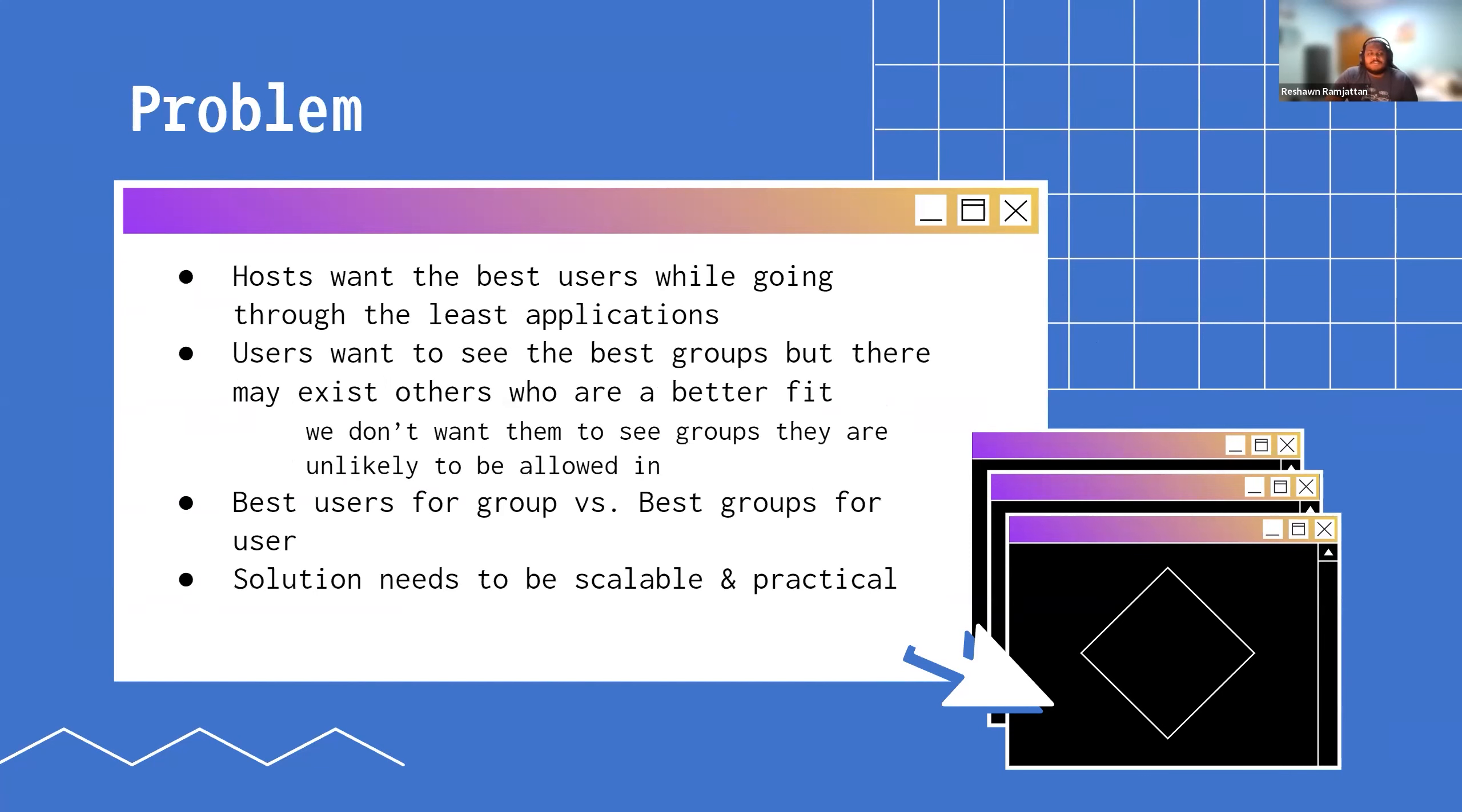But the problem is the users and the hosts kind of have conflicting needs. The hosts want the best possible people while going through the least applications, and the users want to see the best possible groups, but there may be other people who are a better fit. We don't want to overload the hosts, so we don't want people to see groups that they're unlikely to get in even if it looks like it's a perfect match for them. It kind of becomes a situation of how do we balance the best users for a group versus the best groups for a user.